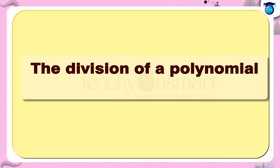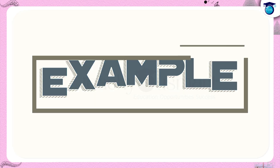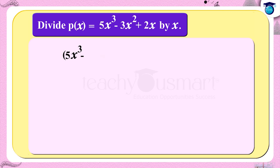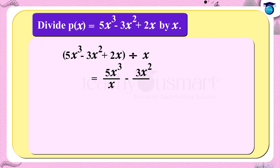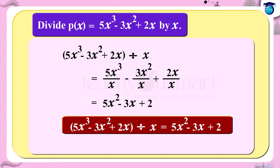First, let us study the division of a polynomial by a monomial. For example, divide p(x) = 5x³ - 3x² + 2x by x. Here we divide each term of p(x) by x: (5x³ - 3x² + 2x) ÷ x = 5x³/x - 3x²/x + 2x/x = 5x² - 3x + 2.